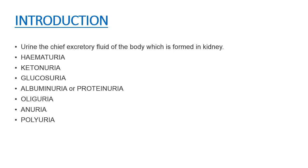Oliguria is a condition in which the urine volume is less than 400 ml. As we already know, the normal volume of urine is 800 ml to 2 liters. When urine volume is less than 400 ml, the condition is known as oliguria and it indicates shock and dehydration.